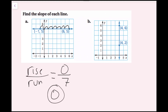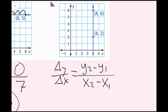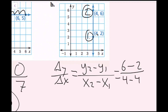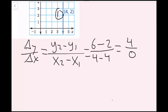For part b, I'll use delta y over delta x, which is y2 minus y1 over x2 minus x1. I'll call the top point number two and the bottom point number one. The y component of point two is six, y component of point one is two, and both x components are four. So I get six minus two over four minus four, which simplifies to four over zero. Now we have a problem because I'm not allowed to divide by zero. If you have four dollars and put them into zero groups, how much money is in each group? That doesn't make sense.